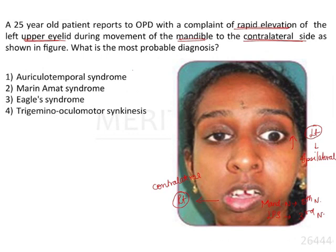In auriculotemporal syndrome, there is damage to the auriculotemporal nerve. It is also known as Frey's syndrome or gustatory sweating. The clinical presentation is profuse sweating in the skin region of the parotid gland on eating. This presentation does not match the given clinical picture, so auriculotemporal syndrome can be omitted.